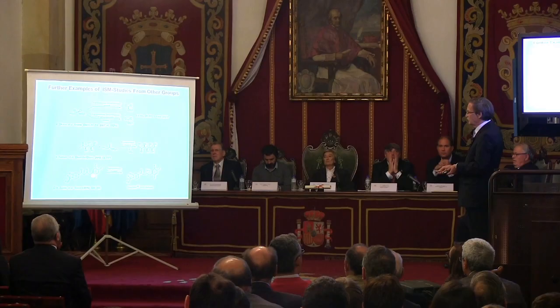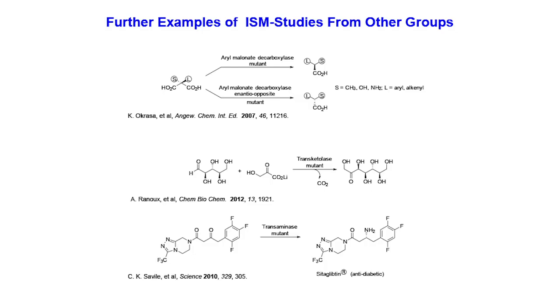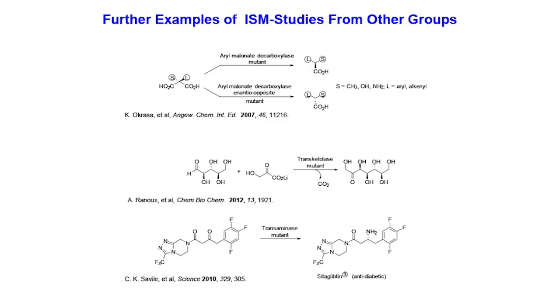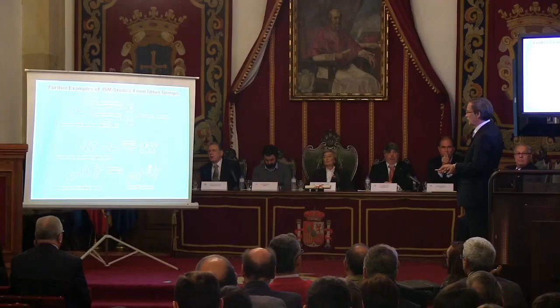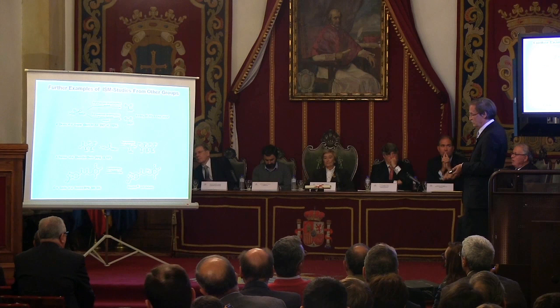Let me focus on one collaboration between Merck in the USA and Codexis, a biochemical company. They used ISM to go from a ketone to the amine by reductive amination and have upscaled this to 50 kilograms or more. So they used our method — whether they cite us is a different problem.